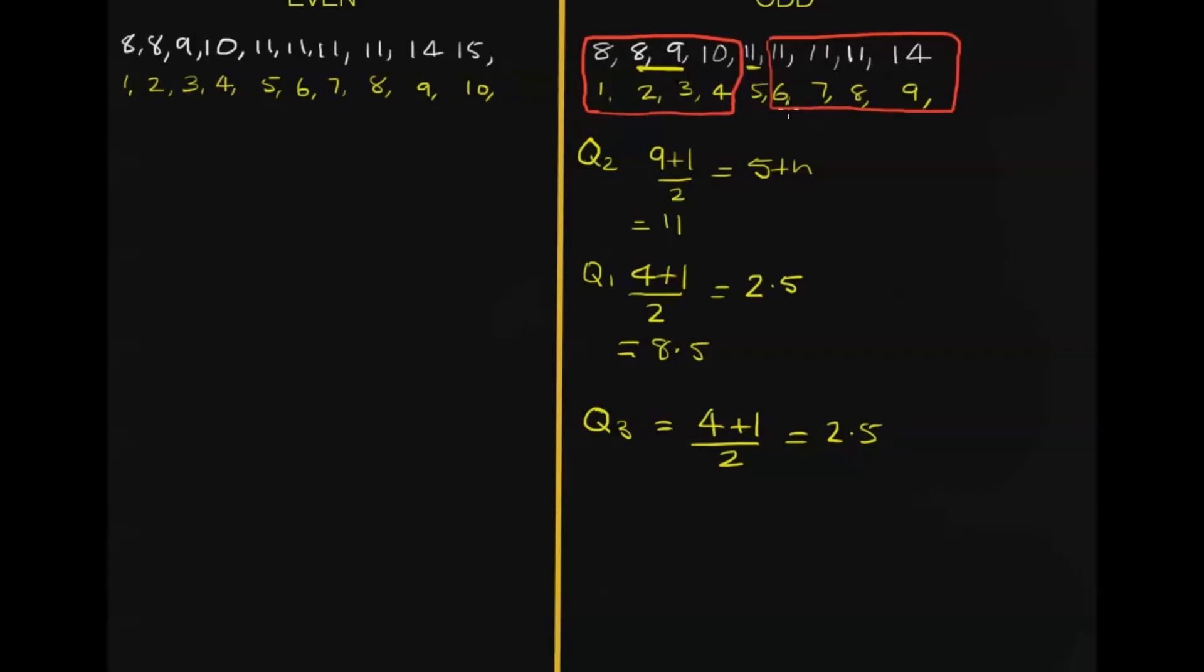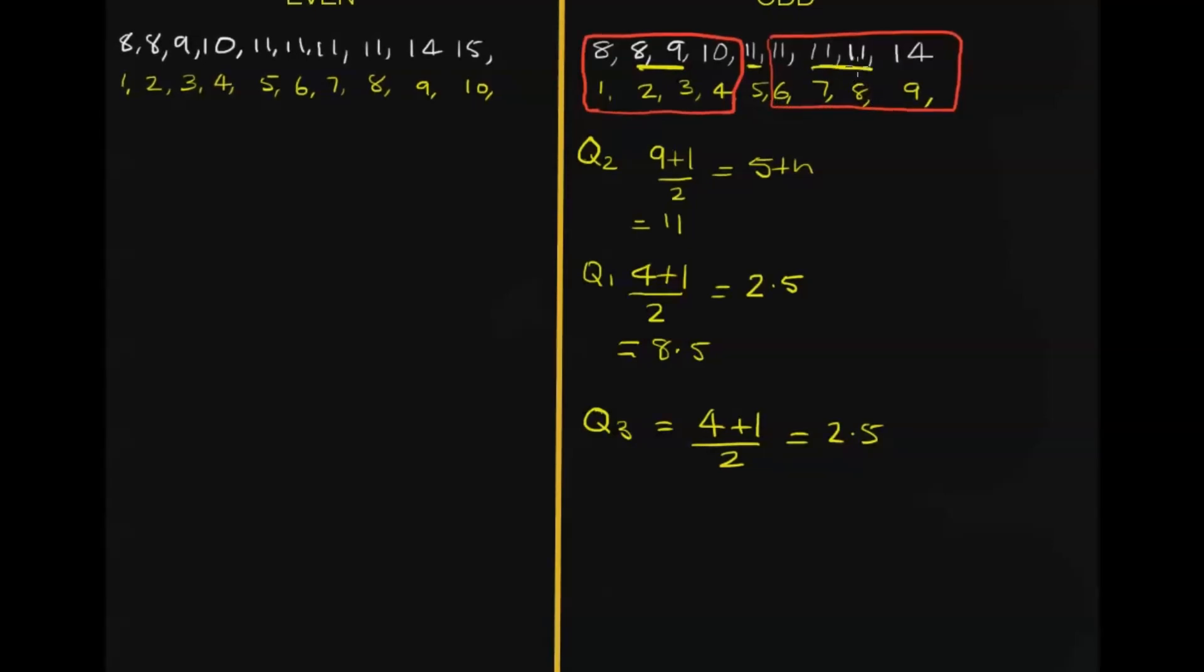Now because we don't have 1, 2, 3, 4 written there, you could write them if you like, but we're just going to count them. 1, 2, 3, well, these are going to be the middle 2.